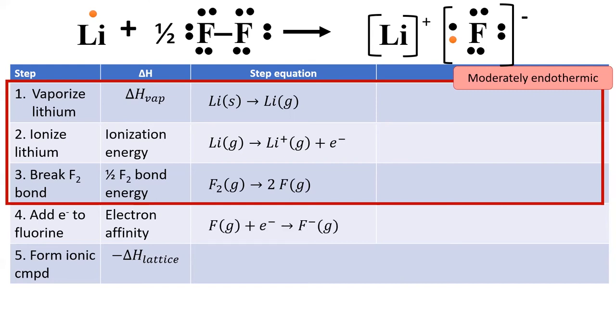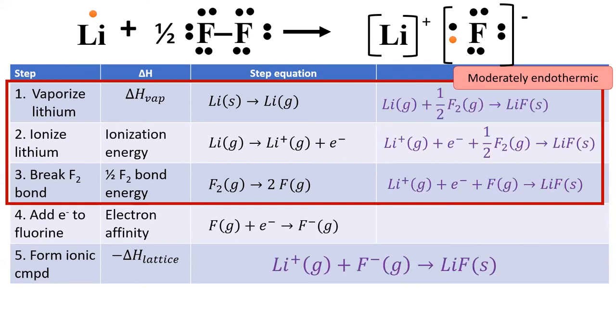The fourth step is to add the free electron to fluorine, which has an enthalpy associated with fluorine's electron affinity and is moderately exothermic. And the last step is where we get our money back. In the last step, we have a positive cation and a negative anion attracting each other and forming an ionic compound called lithium fluoride. The most stable state of an ionic compound is called a crystal lattice. So the energy of the final step is referred to as the lattice energy.